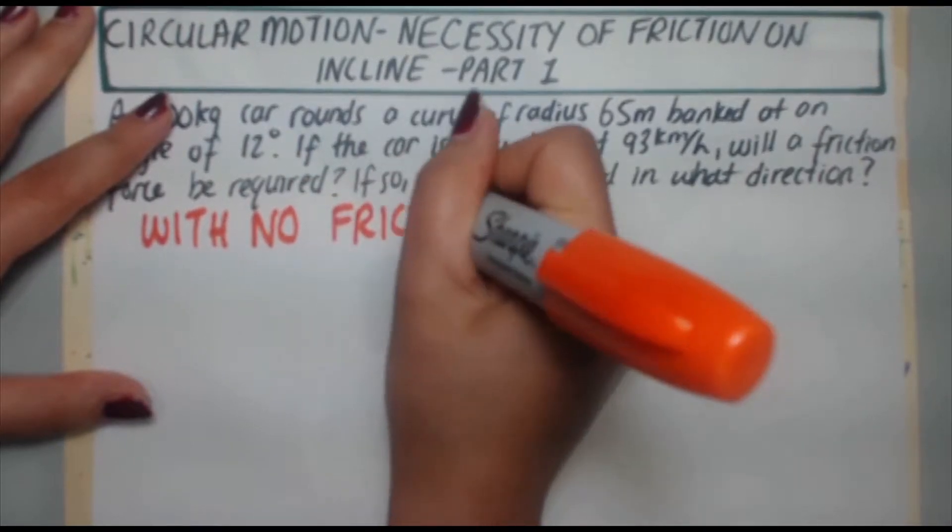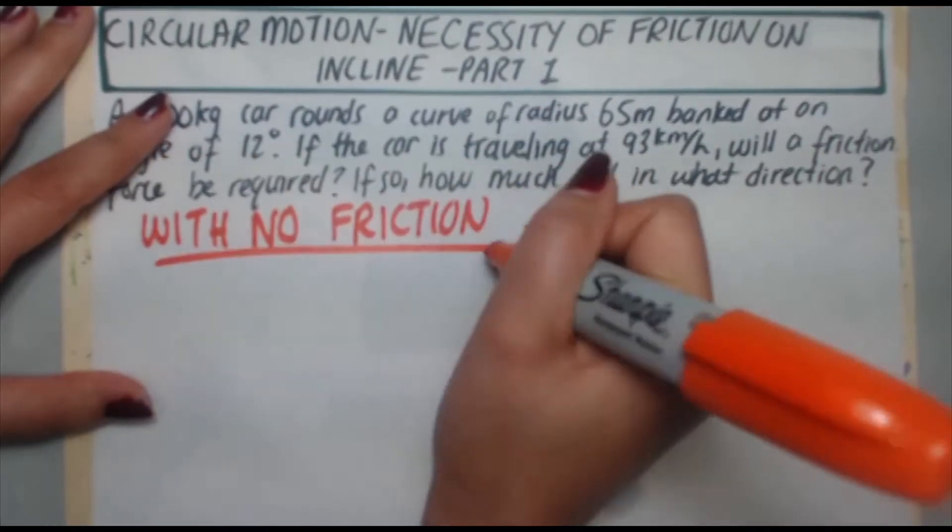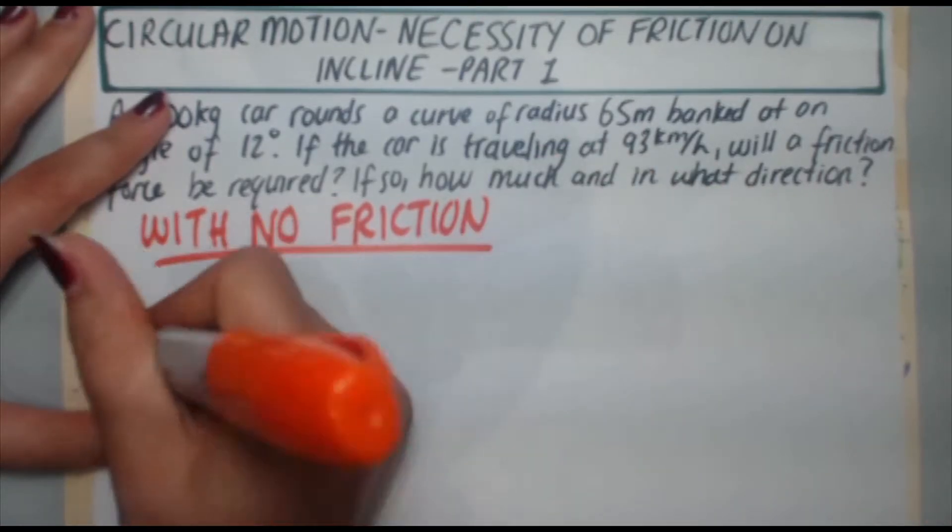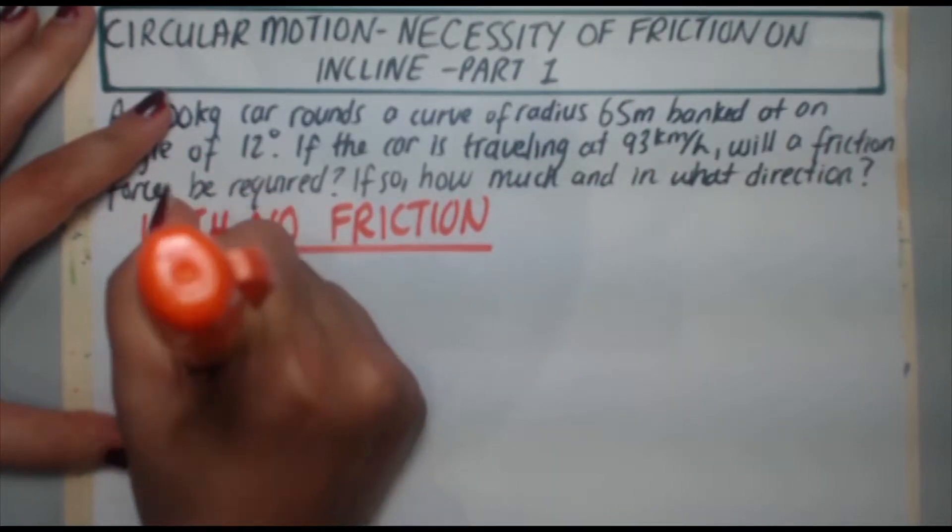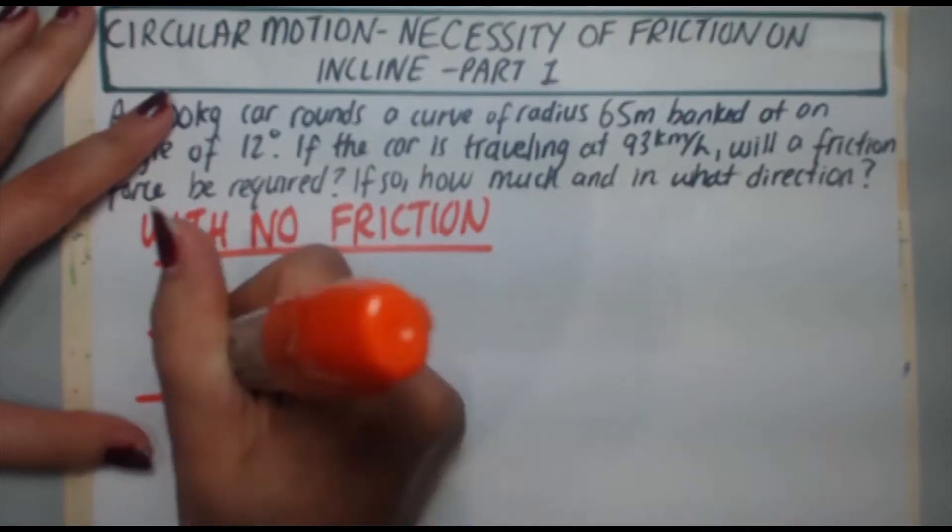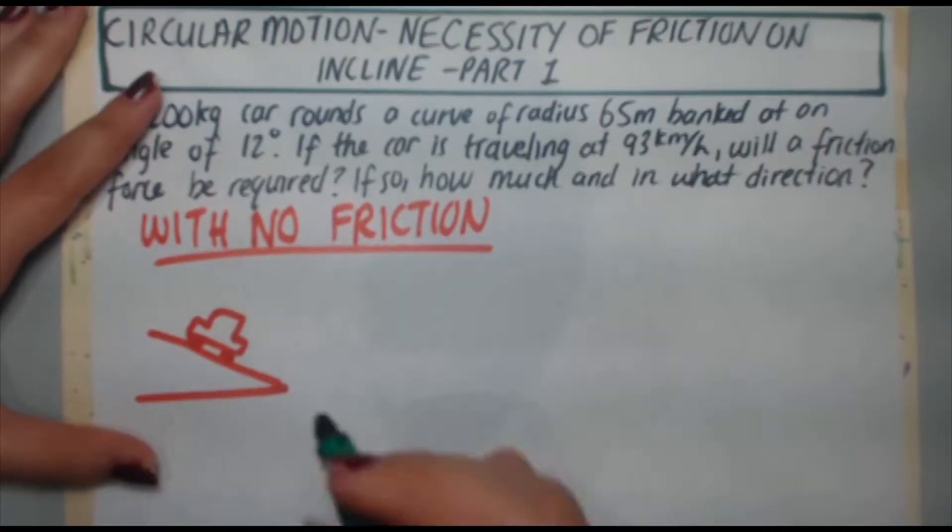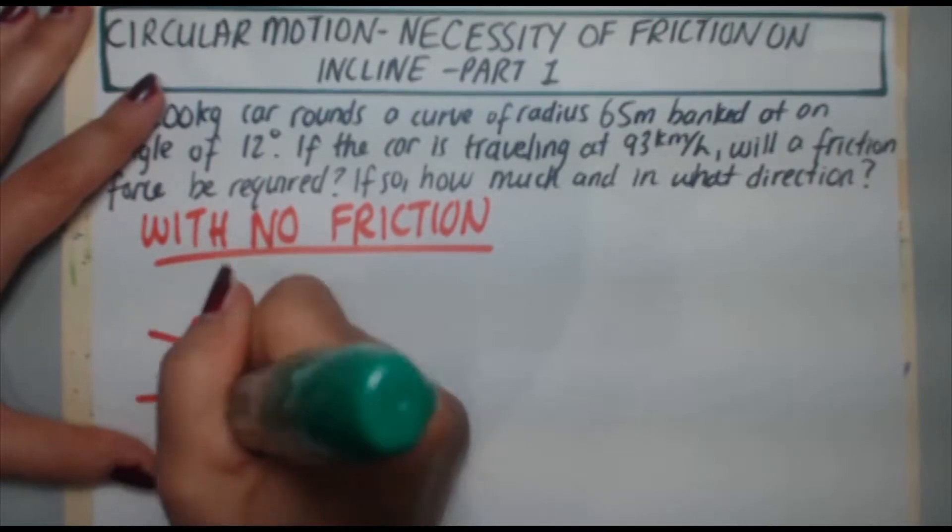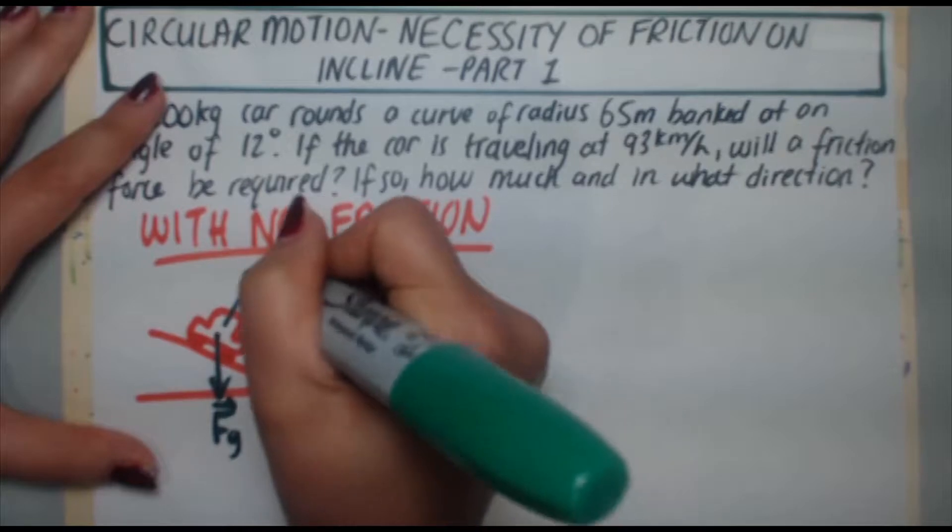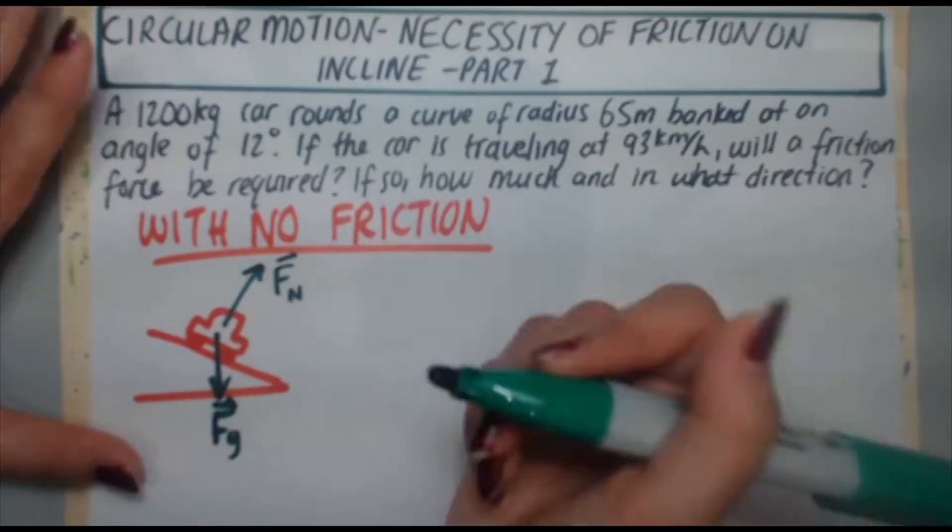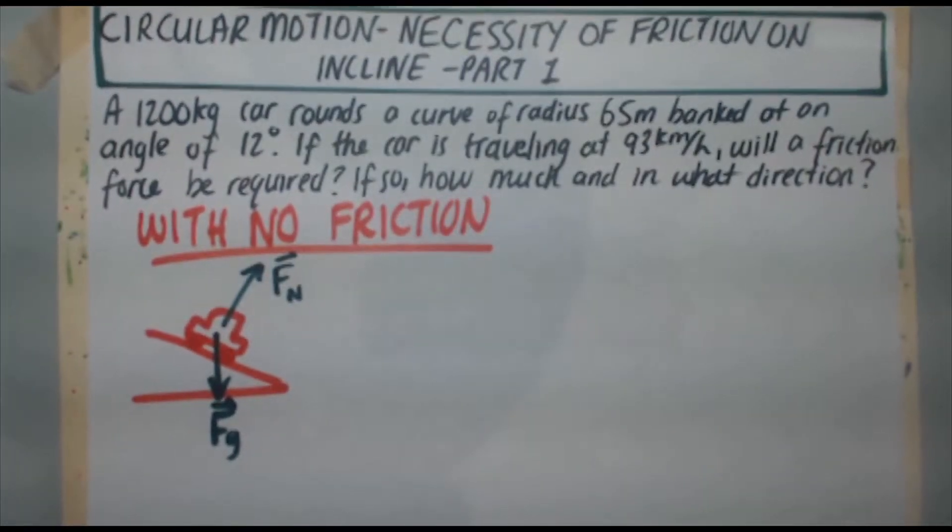So with no friction, I'm going to go ahead and draw my free body diagram. I've got my bank, I've got the car, and let's start drawing the forces in here. I've got my gravitational force going straight down, and I've got my normal force perpendicular to the road. And that's it, right? There's no friction. So that's all of the forces you have.